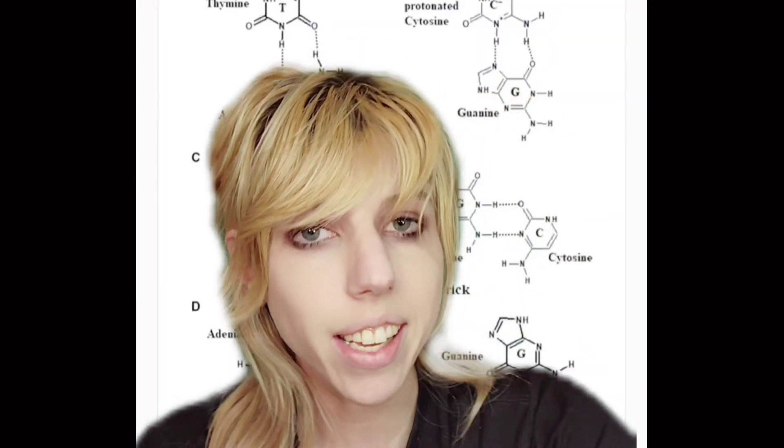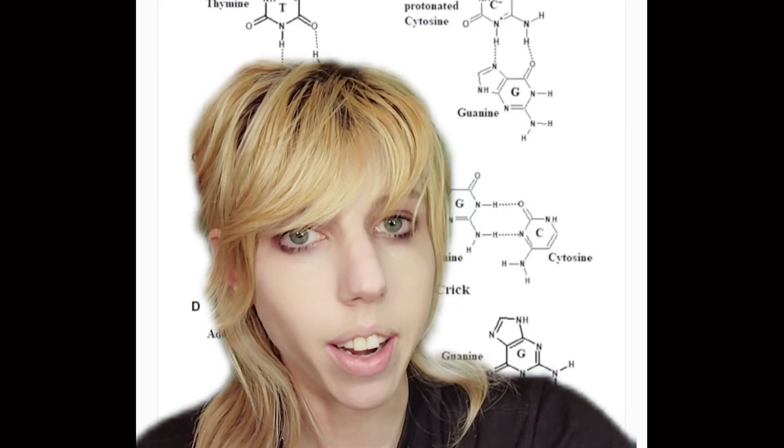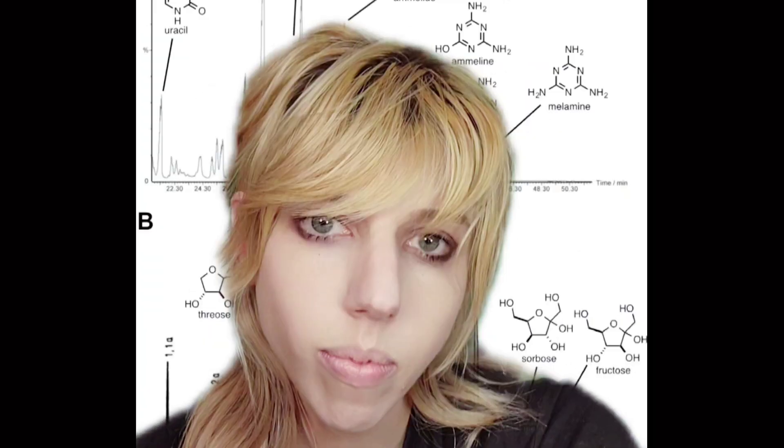One of the questions I would have is, why are these structures not used right now? I mean, we have our standard A, T, C, and G, and it's pretty consistent across all organisms, isn't it? Well, there's a myriad of other structures that we could have. In our genomes, we call these non-canonical nucleotides. Yes, there are more.